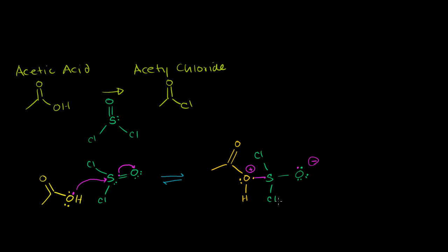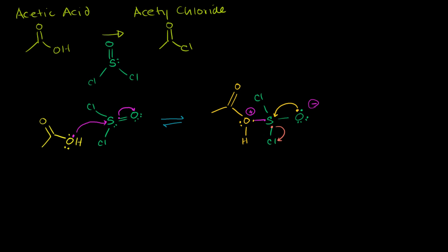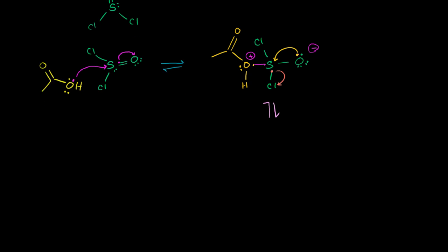In the next step, the sulfur's double-bond oxygen wants to reform the double bond, since sulfur still has a slightly positive charge being bonded to more electronegative atoms. So that electron gets given back to the sulfur, but the sulfur must then bump an electron. Chlorine is electronegative enough to take away one of those electrons, giving chlorine a negative charge. This is again in equilibrium.